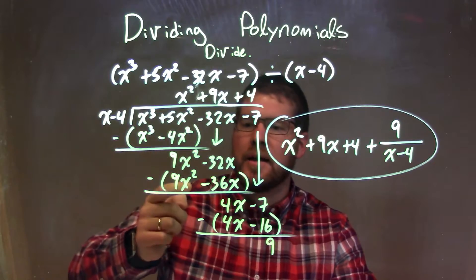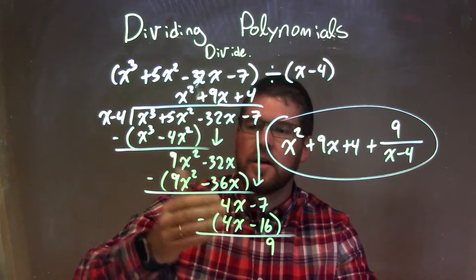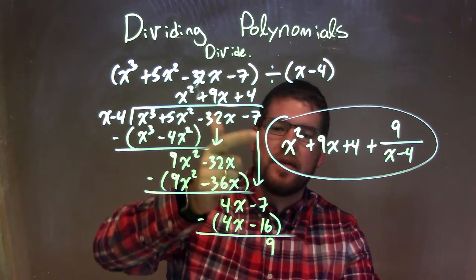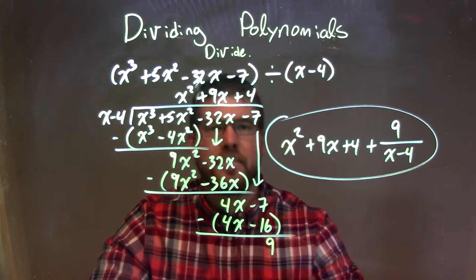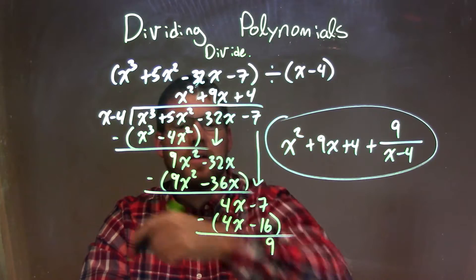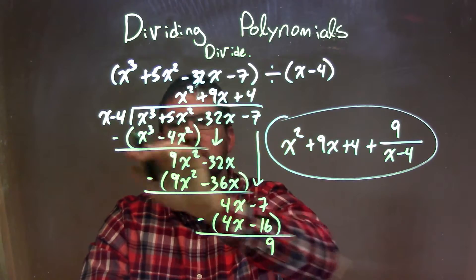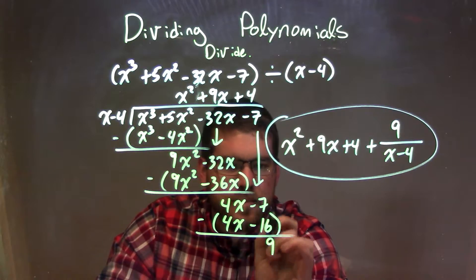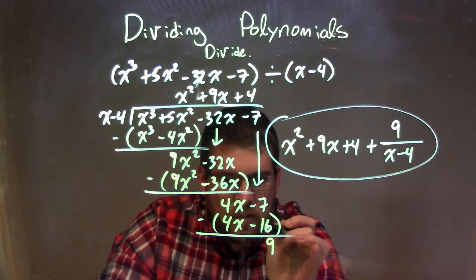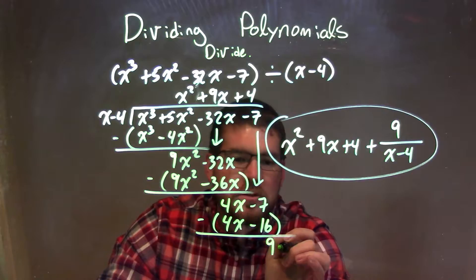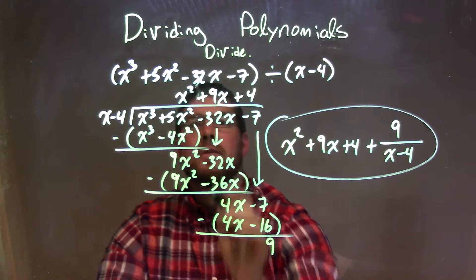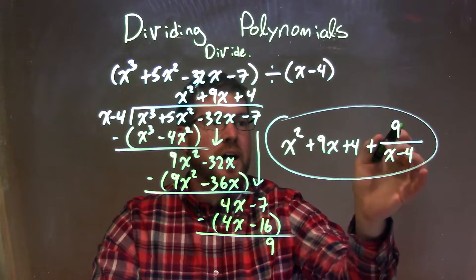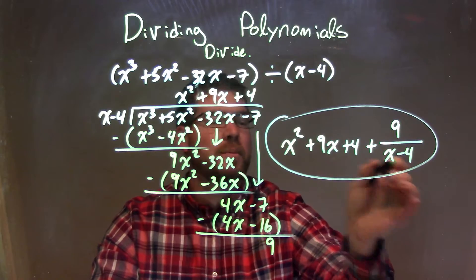Multiply 9x to both parts here. I've got 9x squared minus 36x. Then I subtracted them and I got 4x. I brought down the minus 7. Same question: what times x gives me 4x? And that's just a 4. So 4 times both parts, x minus 4, gave me 4x minus 16. Subtracted the 2, got my remainder, which is a positive 9. So my final answer was x squared plus 9x plus 4, plus my remainder 9, over my divisor x minus 4.